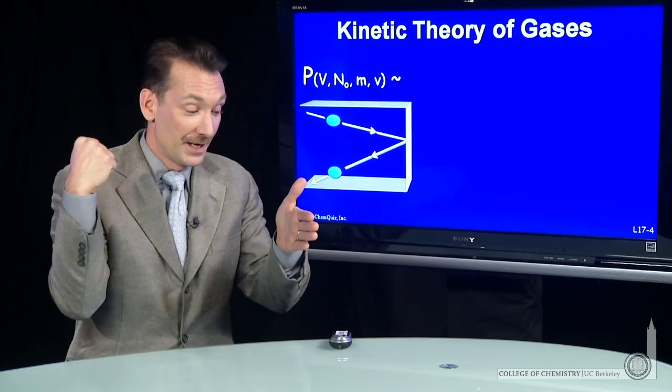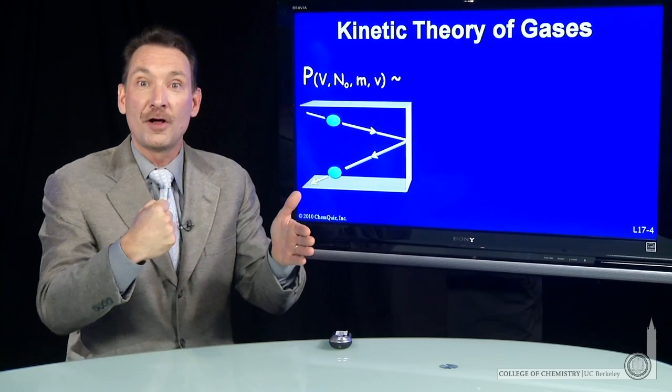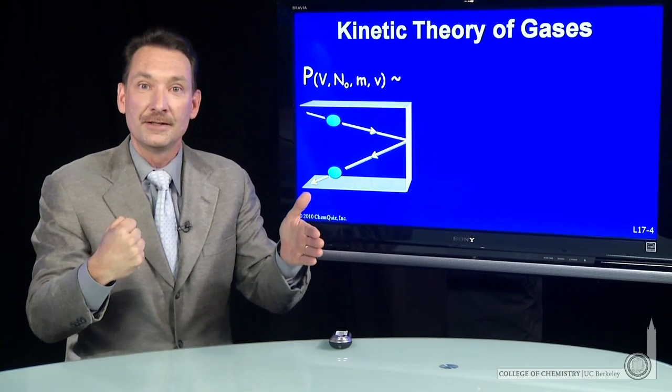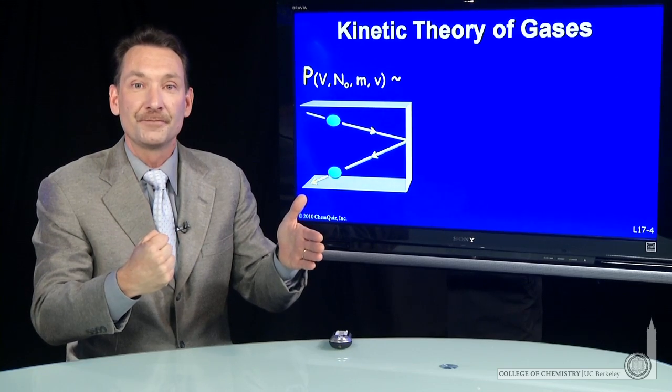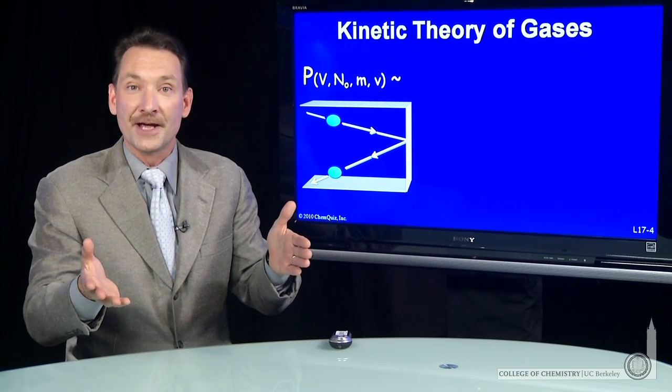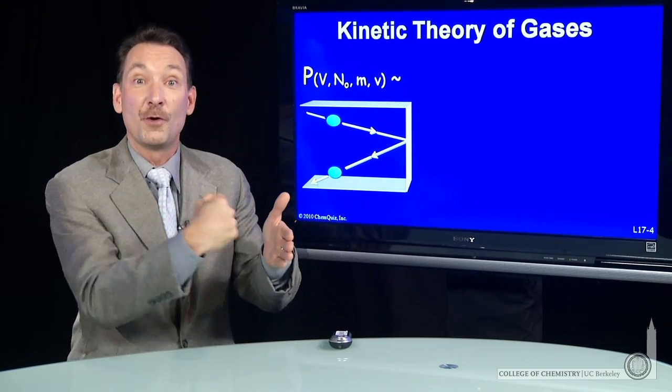The pressure comes from the particles impacting the wall of the flask. And when they impact the wall of the flask, they impart a momentum. A change in momentum is a force. And we want the force per unit area. So there's a momentum, and then there's how frequently the particles hit the wall.